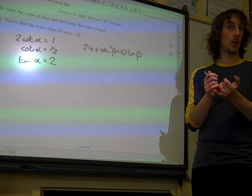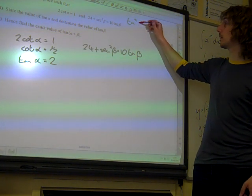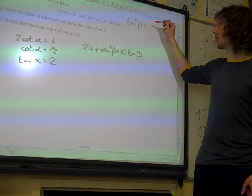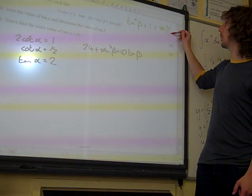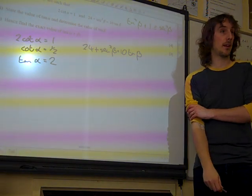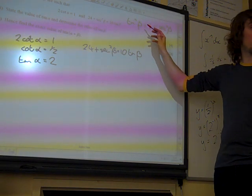Can you remember? Sine squared over cos squared would give us tan squared. Cos squared over cos squared would give us 1. 1 over cos squared would give us sec squared. That's the identity that we want, because we're going to replace sec squared beta with tan squared beta plus 1.